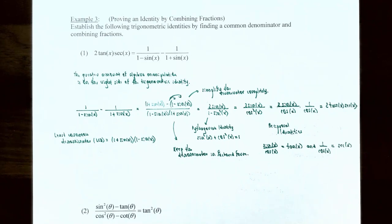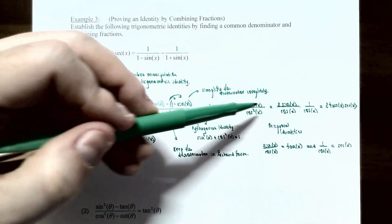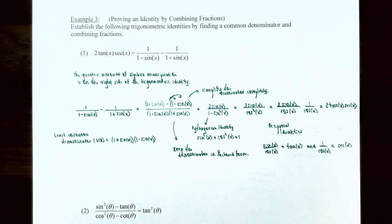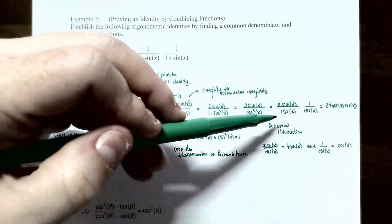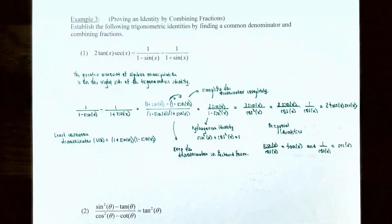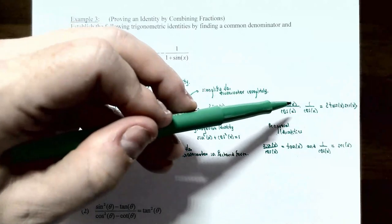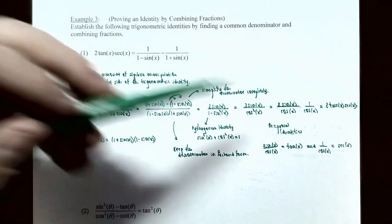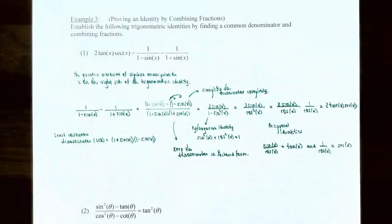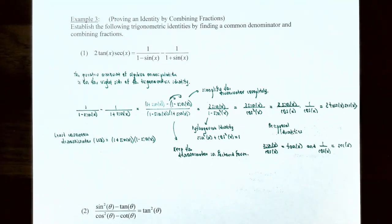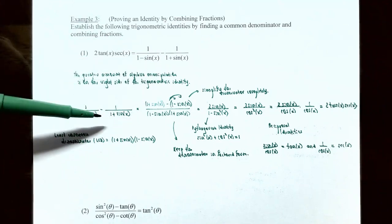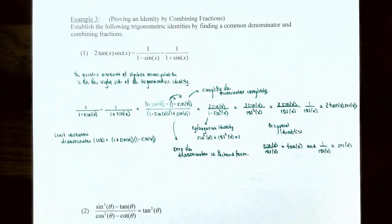Rewrite the single fraction as a product of two fractions: 2 sin x over cos x, times 1 over cos x. Since cos²x = cos x · cos x, put cos x in the denominator of each fraction. Now 2 sin x / cos x is 2 tan x, and 1 / cos x is sec x because secant is the reciprocal of cosine. So we have 2 tan x · sec x, which is exactly what we needed to establish. The identity is proved.